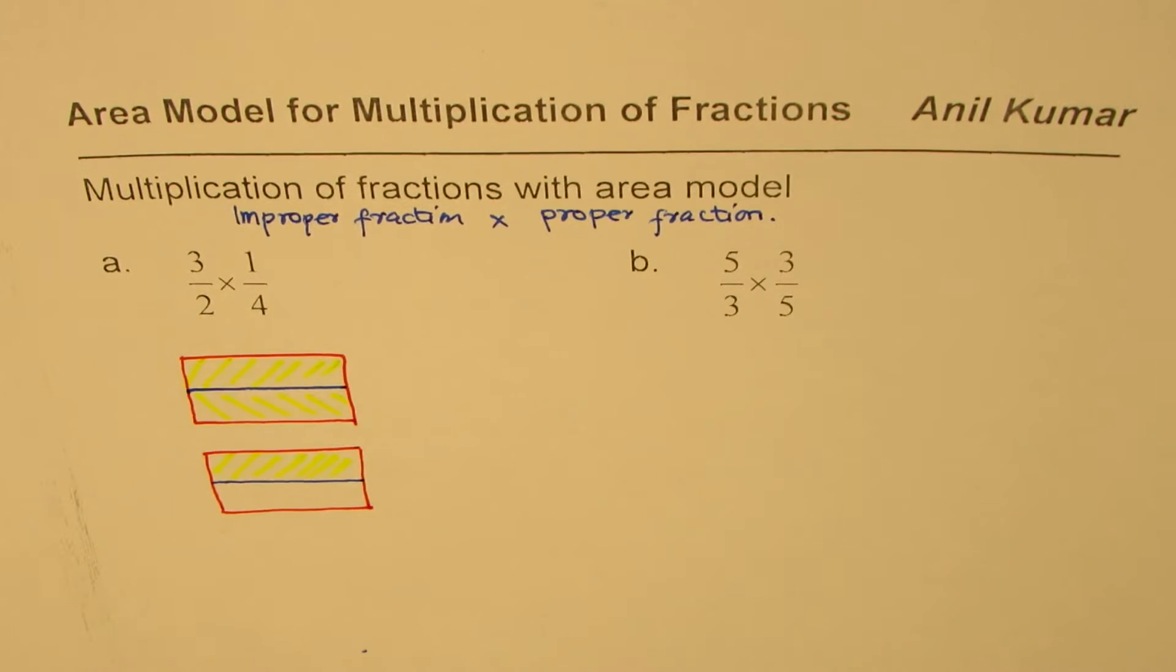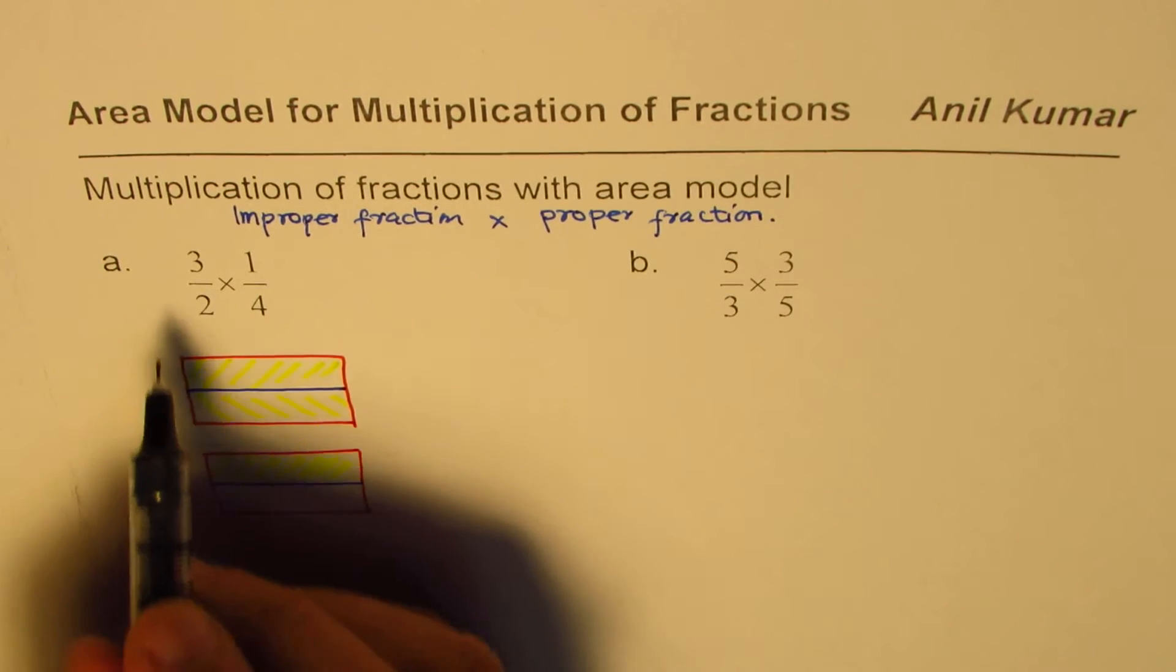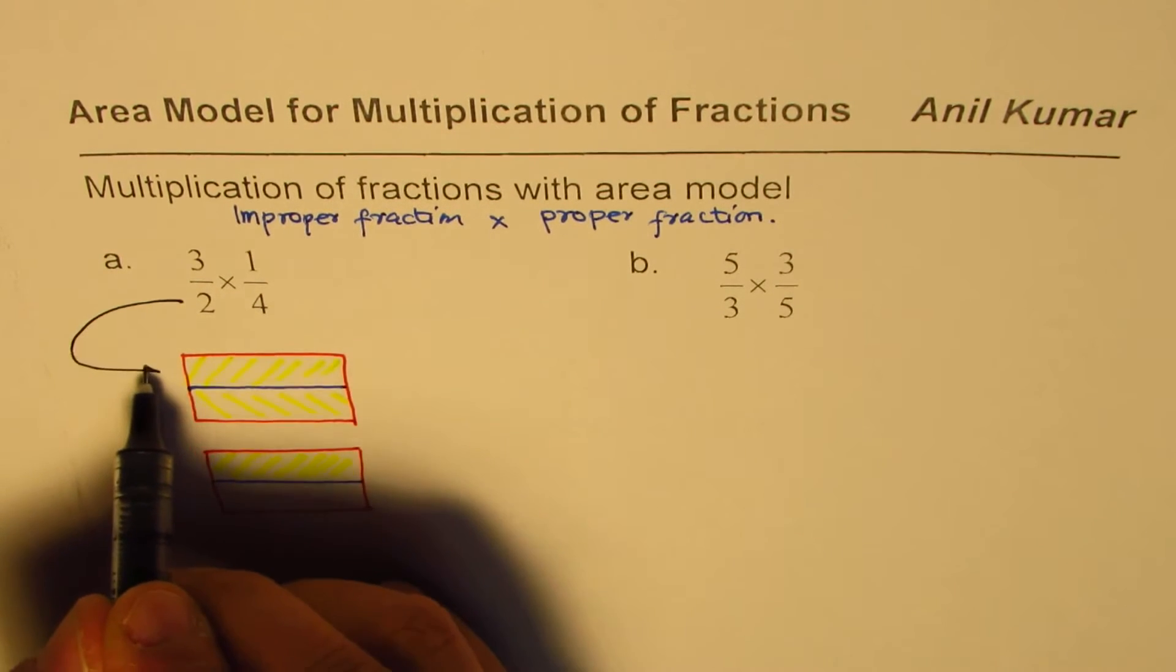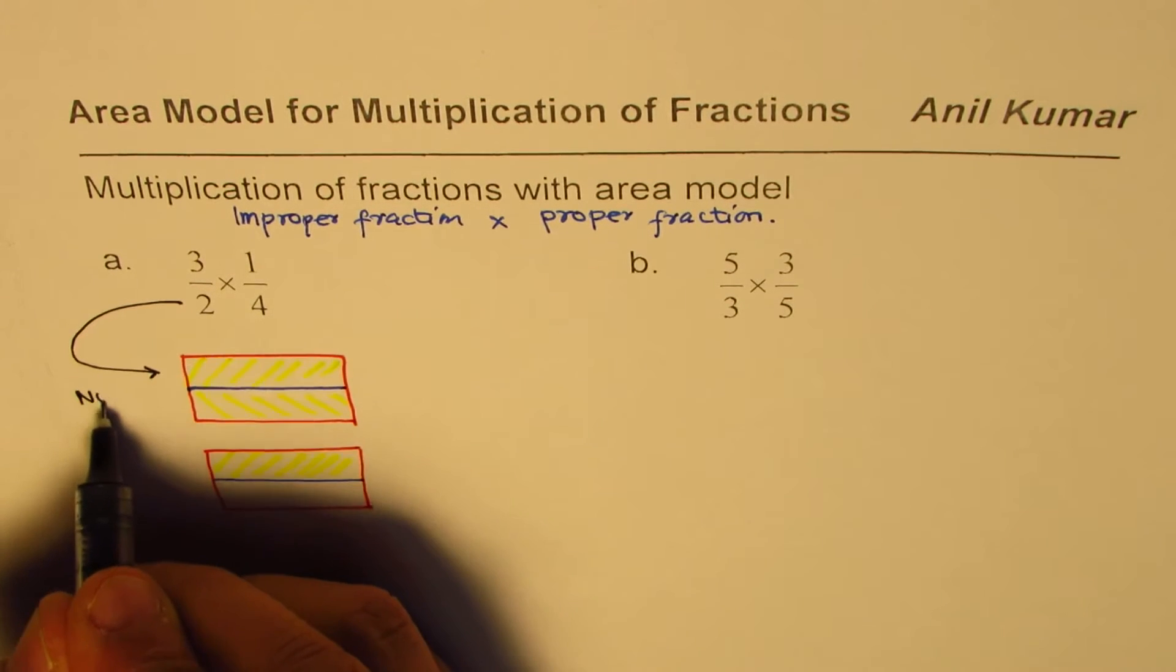You will also see that we have utilized one of the denominators in forming the number of rows. So this 2 is giving us number of rows.